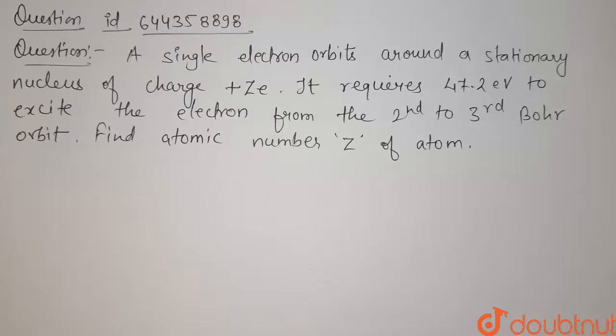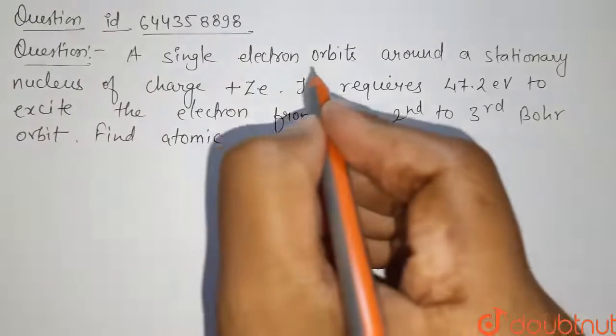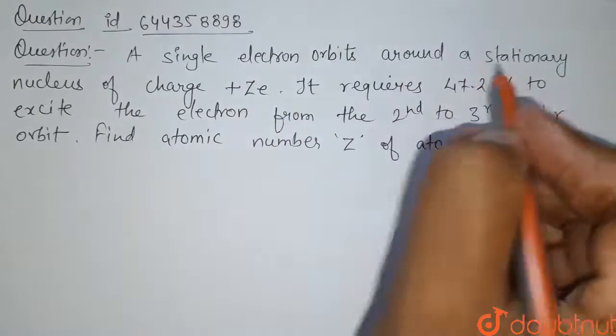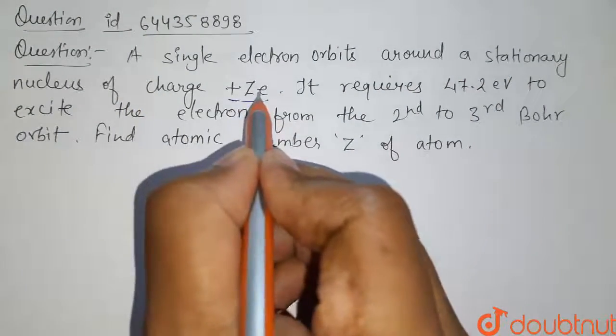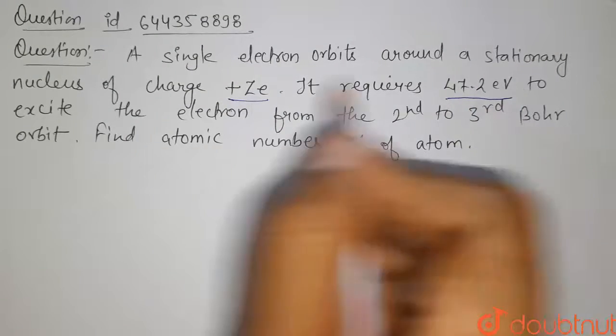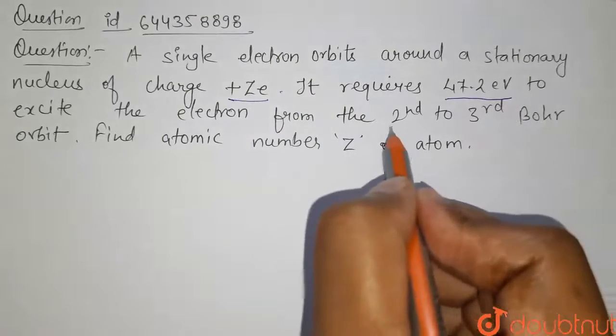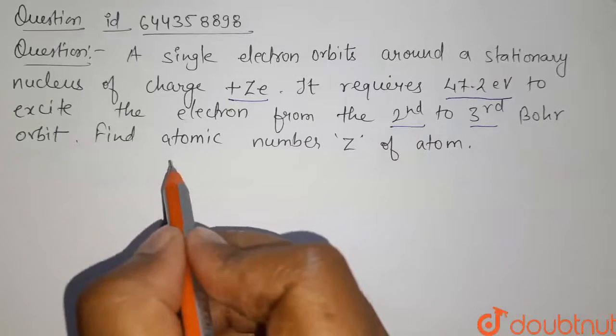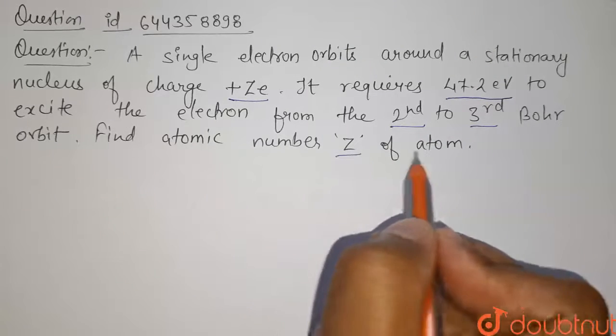Hello students, here is our question. A single electron orbits around a stationary nucleus of charge plus ZE. It requires 47.2 electron volts to excite the electron from second to third Bohr orbit. Find the number Z of the atom.